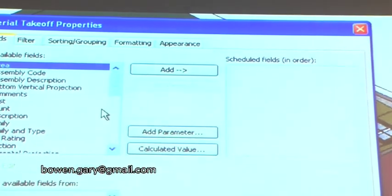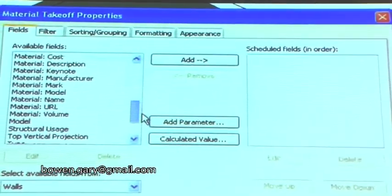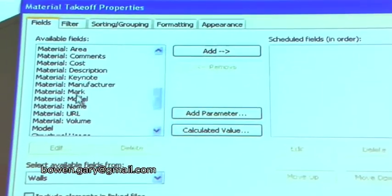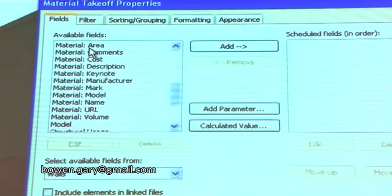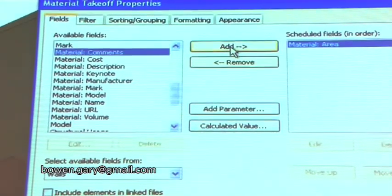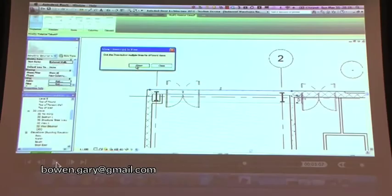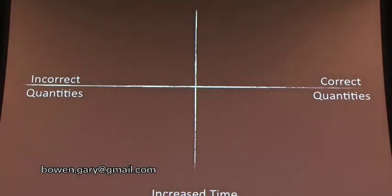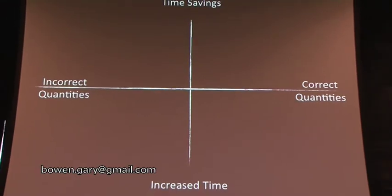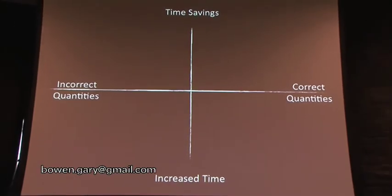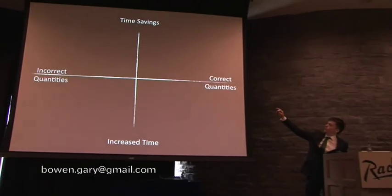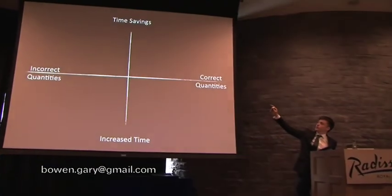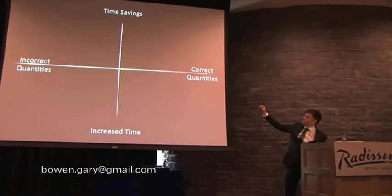Here we can decide whether we want the area, the width, the volume — we can extract any information from the model. There's a kind of business school model with time savings at the top, increased time at the bottom, correct quantities on one side and incorrect quantities on the other. Obviously we want to be in the corner of time savings and correct quantities — up at the top right with our measurement.